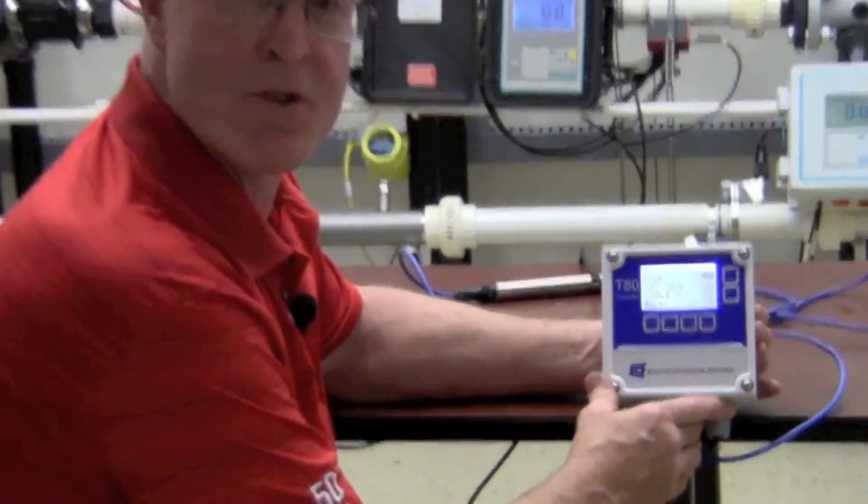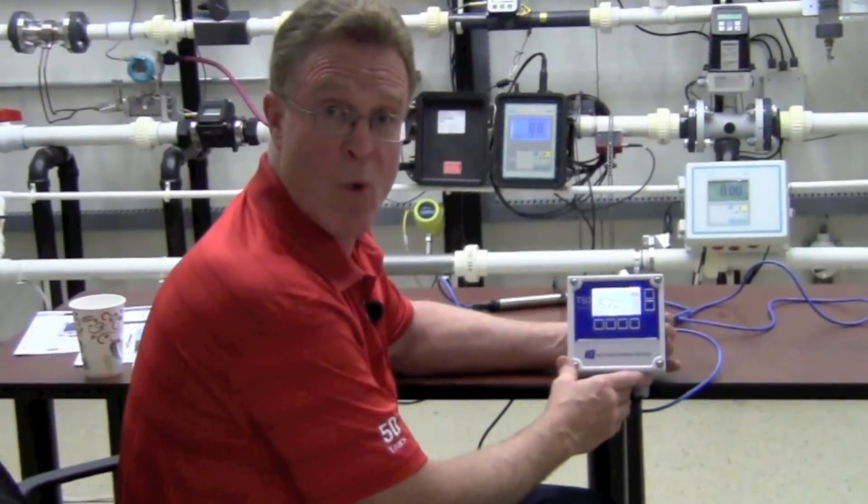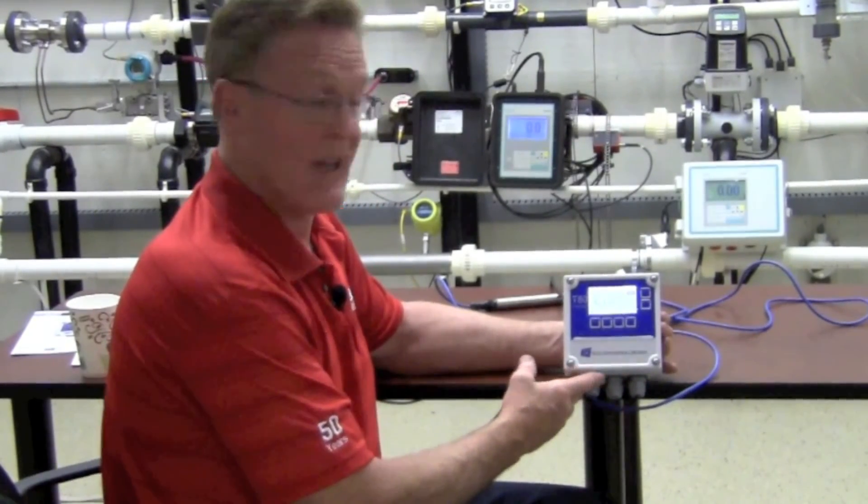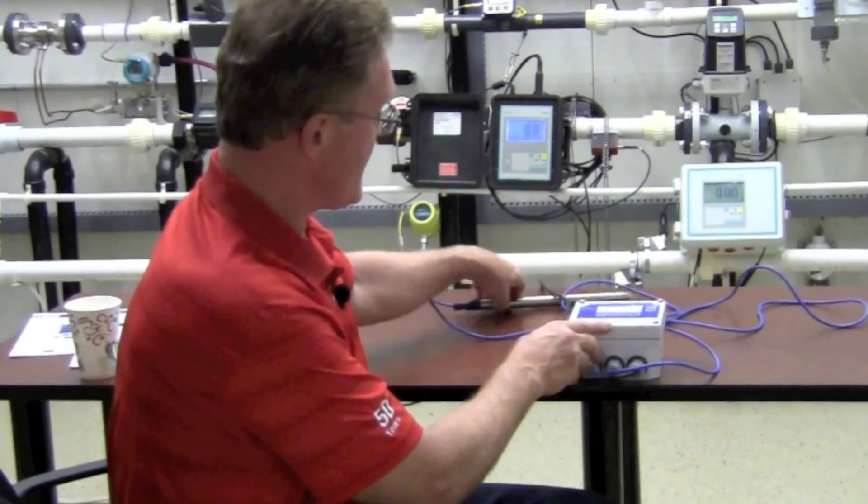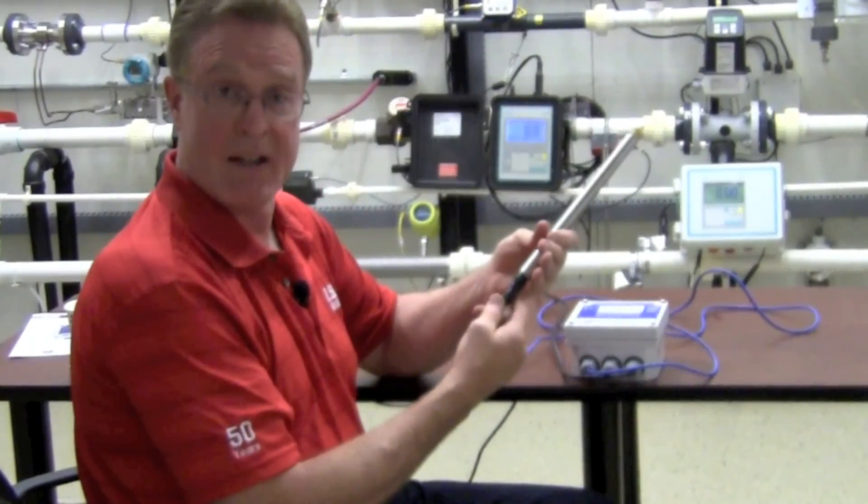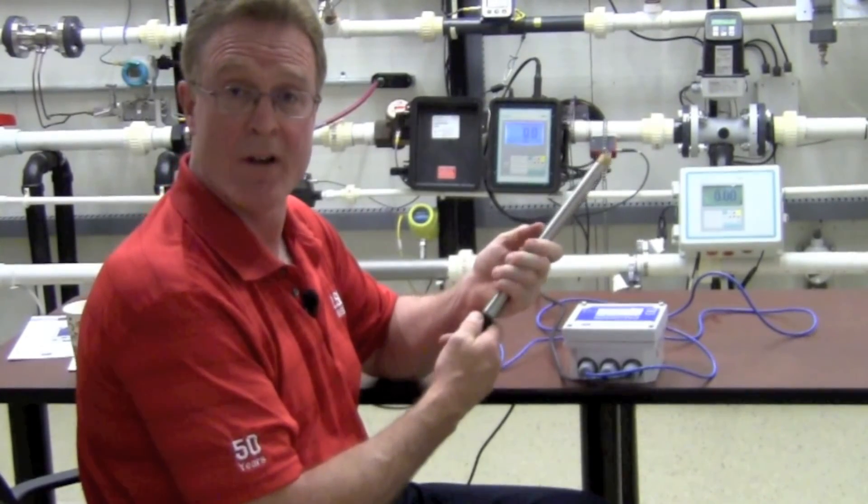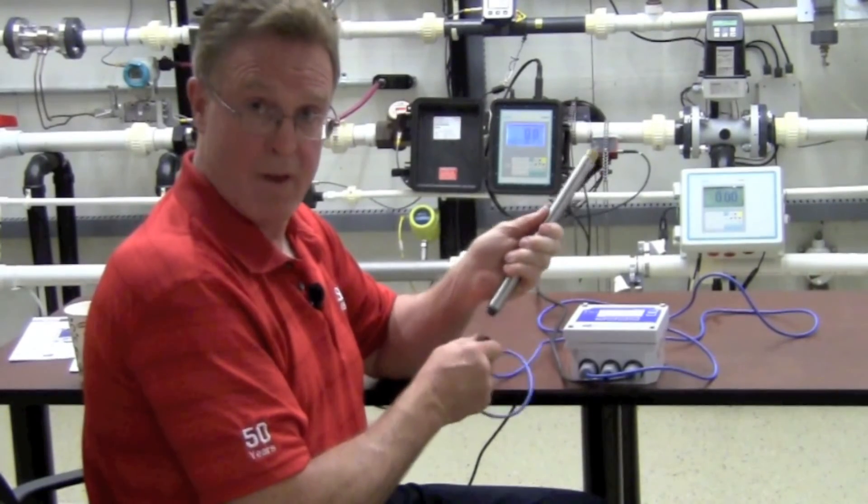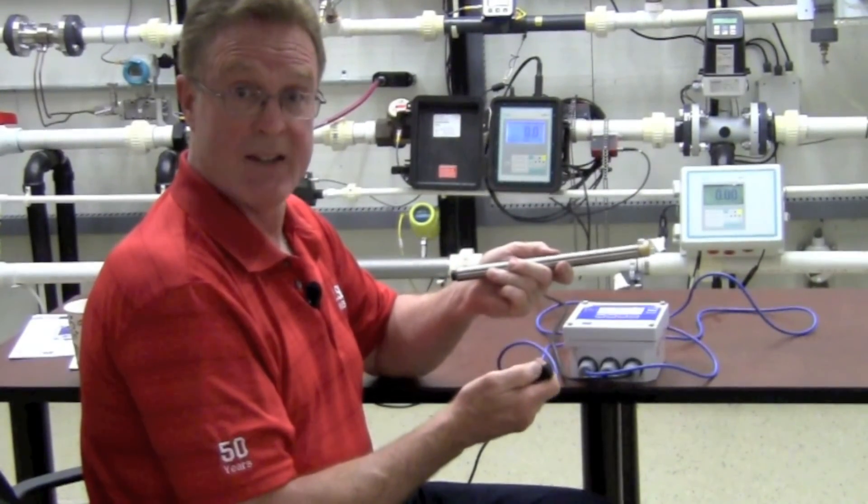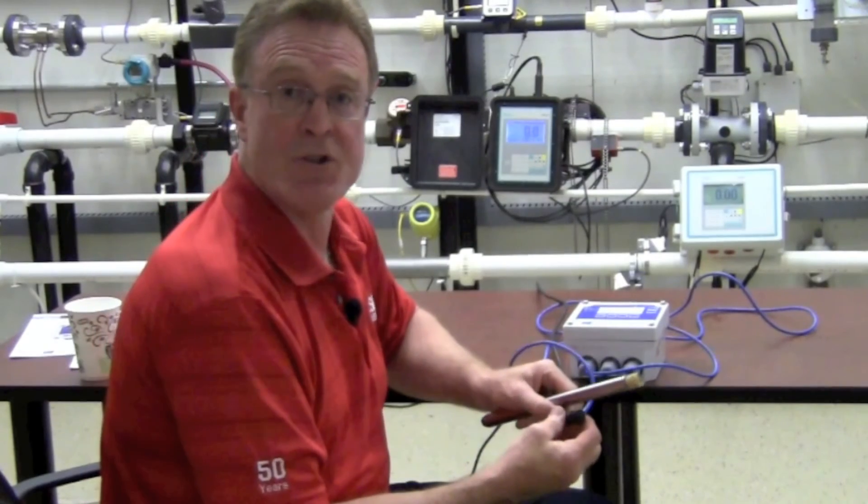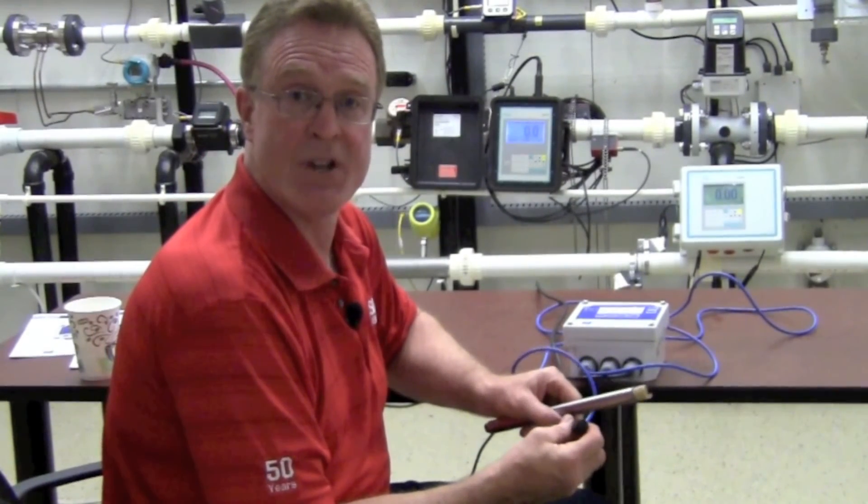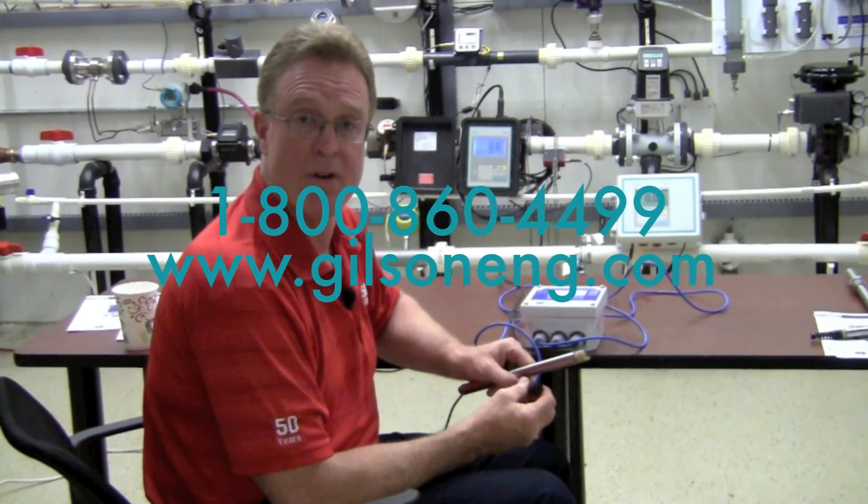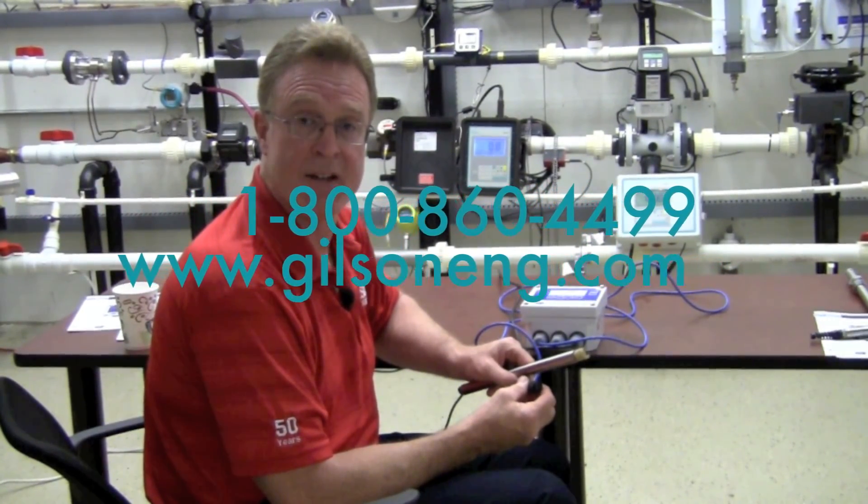While the S80 sensors are available in a wired unit, the capability of automatic calibration, as I've shown you, in conjunction with the quick disconnect on the back end, either a straight or right angled, makes it a true winner and makes it easy for you to utilize in the field with the ability to do your calibrations back in the lab. For additional information on the S80 and T80, please contact your local Gilson office at 1-800-860-4499. Thank you.